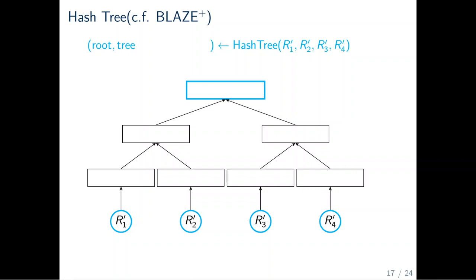Hash trees, also called Merkle trees, were first used in the context of lattice-based blind signatures in the work BLAZE plus. A hash tree is a binary tree data structure where a list of values, here R'1 to R'4, are hashed together to get a single hash value, the root of the tree. The leaves of the binary tree are the hashed values. To get the hash value of the parent, both children nodes are hashed together. This step is repeated until the root of the tree is reached.